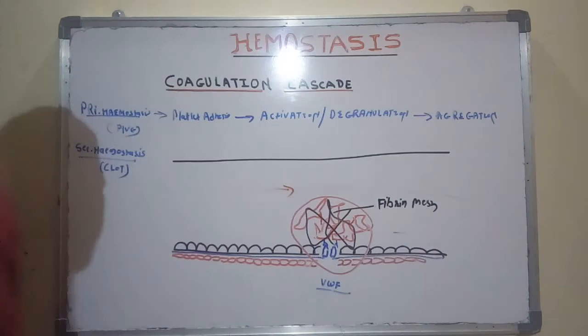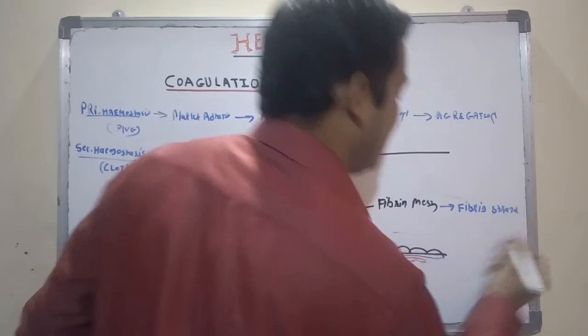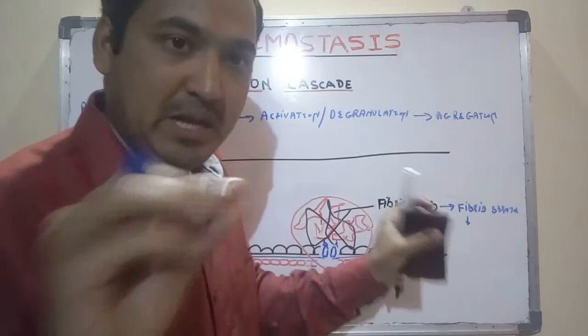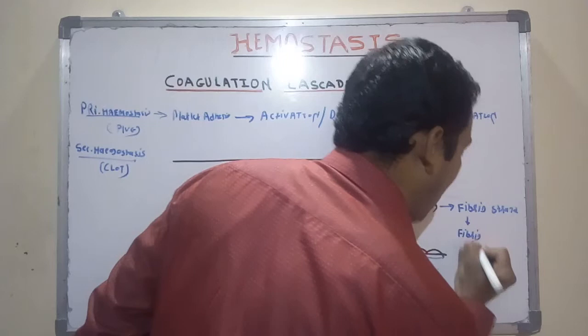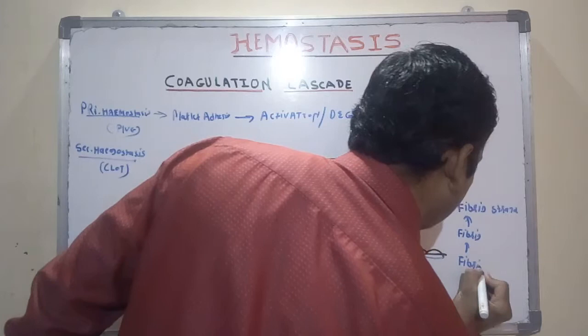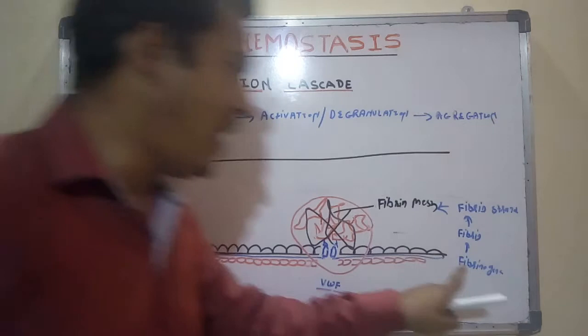The fibrin meshwork is formed in secondary hemostasis. Once this fibrin mesh is formed, the plug becomes strong and is then called a blood clot — or secondary hemostatic plug. The fibrin mesh is formed from fibrin strands; a single unit is fibrin and multiple units make a strand. Fibrin is made from fibrinogen — the strands form the mesh that holds the platelets together.